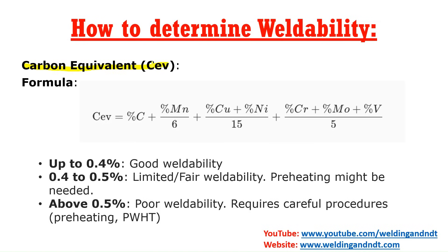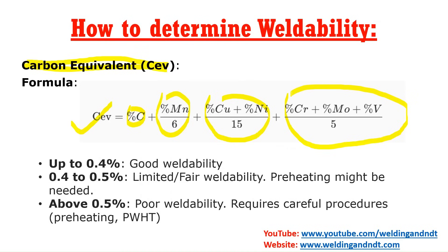To determine weldability, we need to calculate the carbon equivalent. Carbon equivalent is calculated using this formula: percentage of carbon, plus percentage of manganese divided by 6, plus percentage of copper plus nickel divided by 15, plus percentage of chromium, molybdenum, and vanadium divided by 5. This formula gives a good figure of weldability.